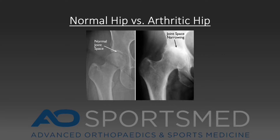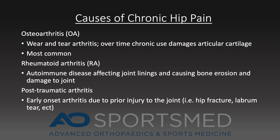This is an x-ray of both a normal as well as an arthritic hip. The normal hip has adequate space for the cartilage, which is the protective covering and cushion of the joint. As you can see on the right side, there is joint space narrowing indicating arthritis. Arthritis is a constellation of findings including bone spurs, joint space narrowing, and deformity. This is easily visualized on x-ray and an MRI is not typically necessary.